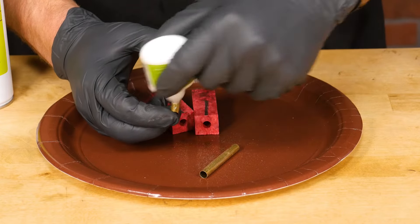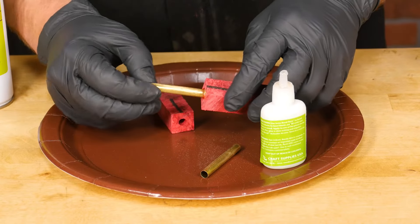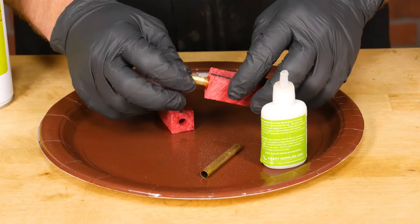Now coat a tube in thick CA glue, twisting as you insert it to spread the glue evenly. Work quickly as CA glue sets very fast.